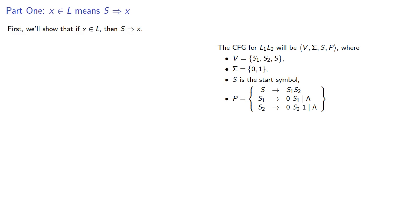So first let's show that if x is in our language, then S can produce x. We can assume that x is in our language, then x is in the concatenation of L1 and L2, and consequently x is x1x2, where x1 is in L1 and x2 is in L2.